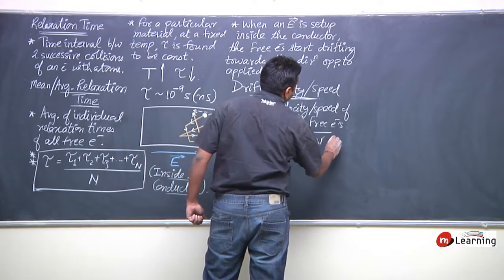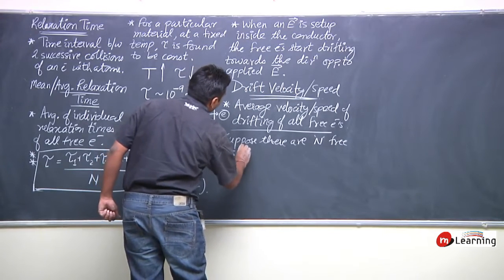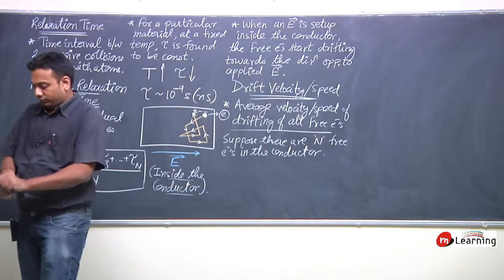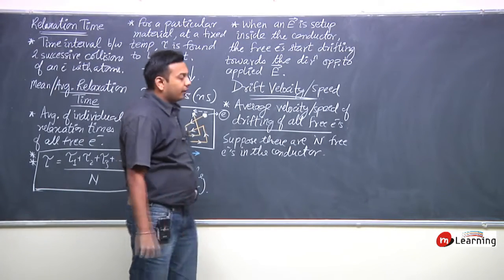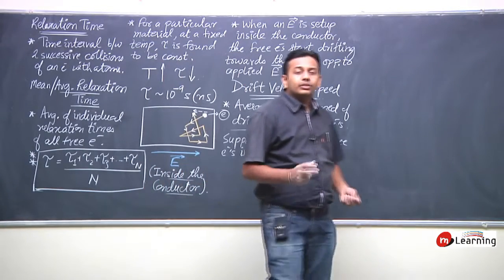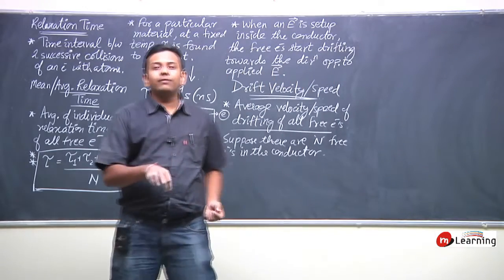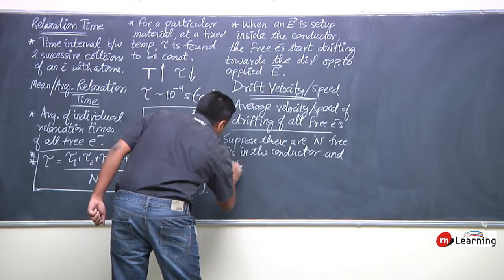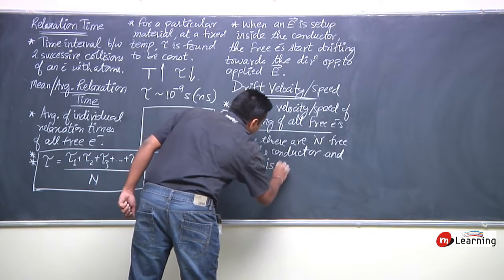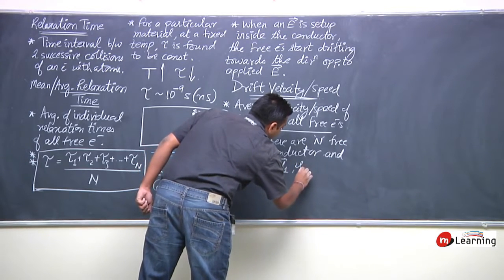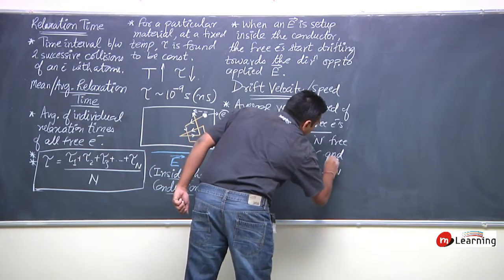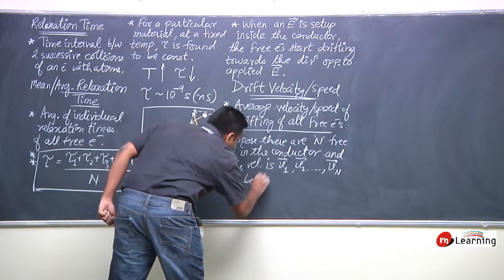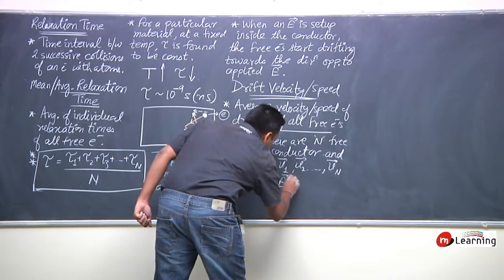Suppose there are n free electrons in the conductor, and their velocities are u1, u2, u3, up to un, just before the electric field is set up.